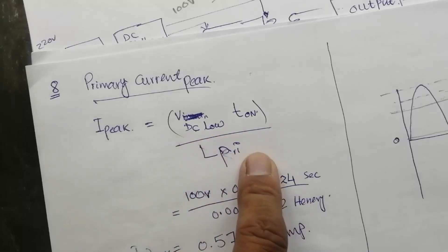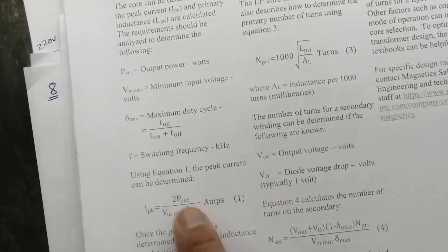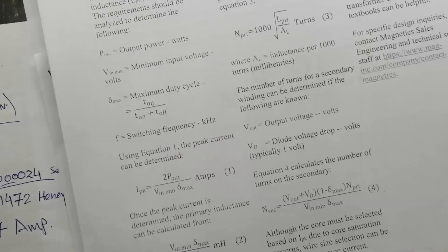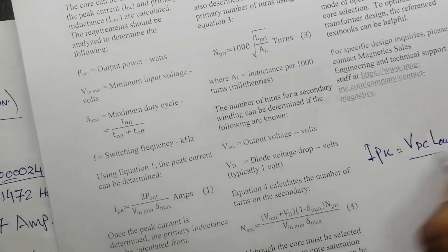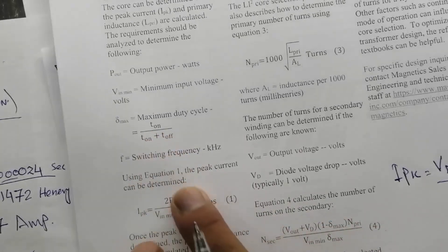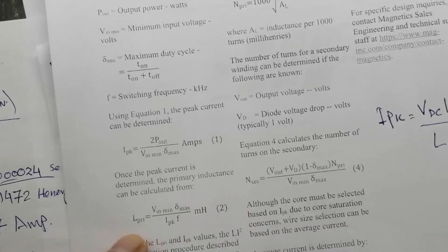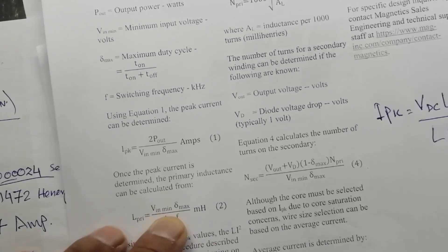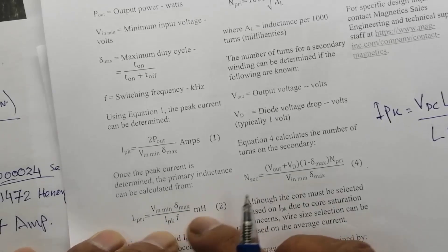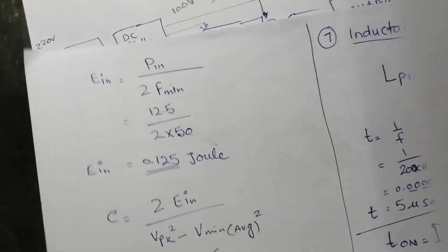For primary peak current, there are two approaches that give the same result. Either use I-pk = 2 × P-out / (V-in-min × D-max), or use I-pk = V-DC-low × t-on / L-primary if L-primary is already calculated. Both methods yield the same peak current. Then calculate L-primary using: L-primary = V-in-min × D-max / (I-pk × f), and the result comes out in millihenry.